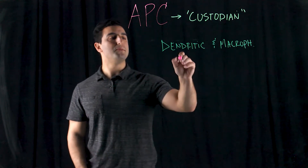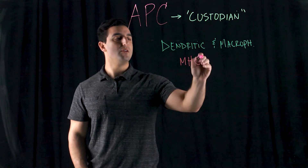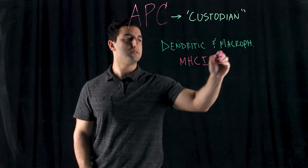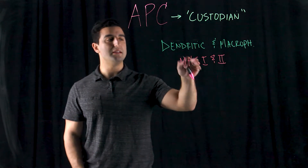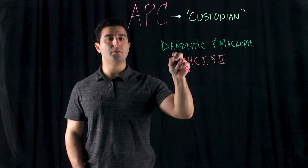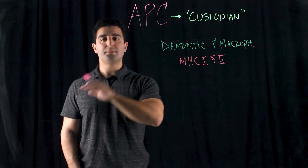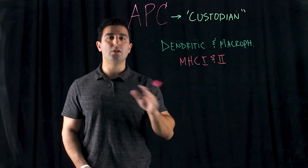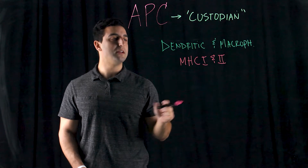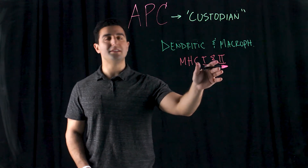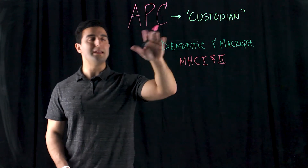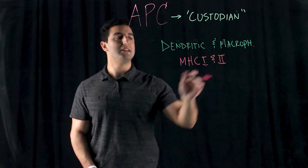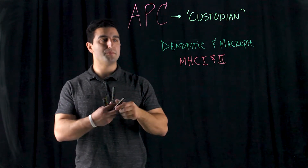They express both the MHC1 and MHC2 complex. MHC1 is present in all cells in our body, while MHC2 is only specific to the APCs — antigen-presenting cells only have this MHC2 reaction.